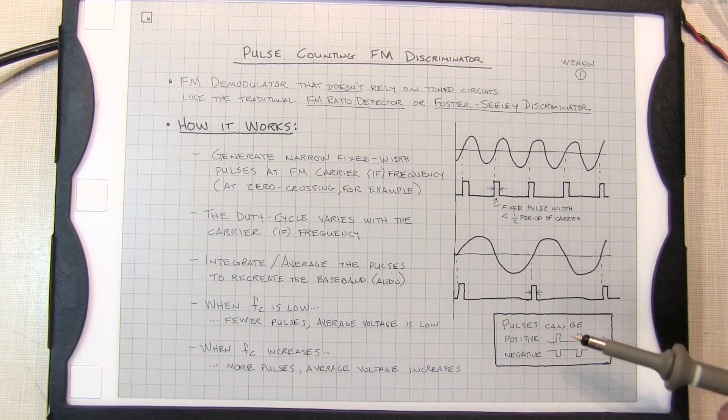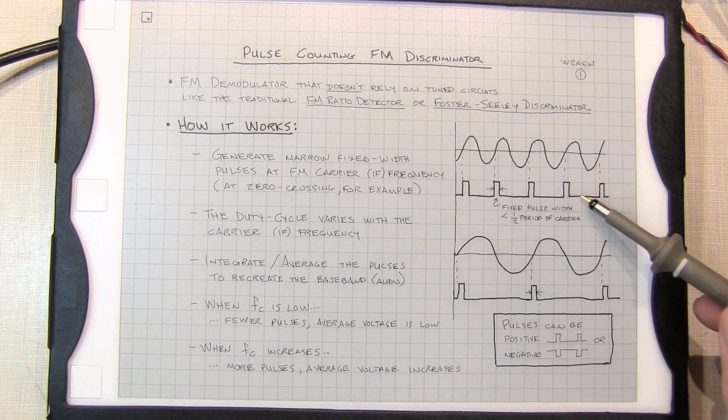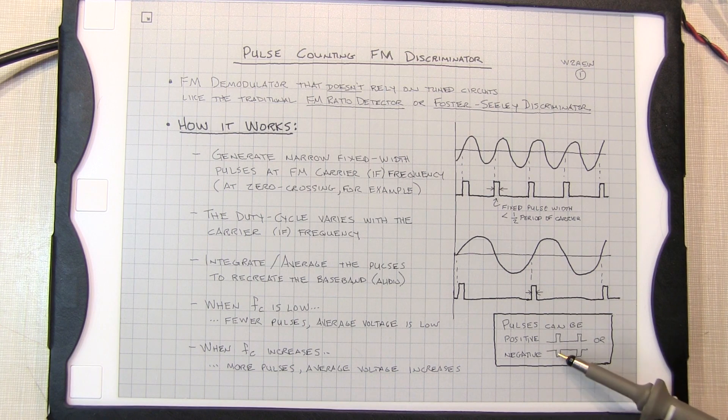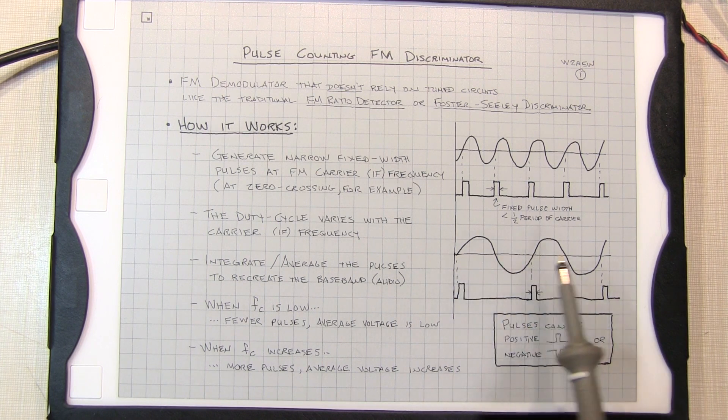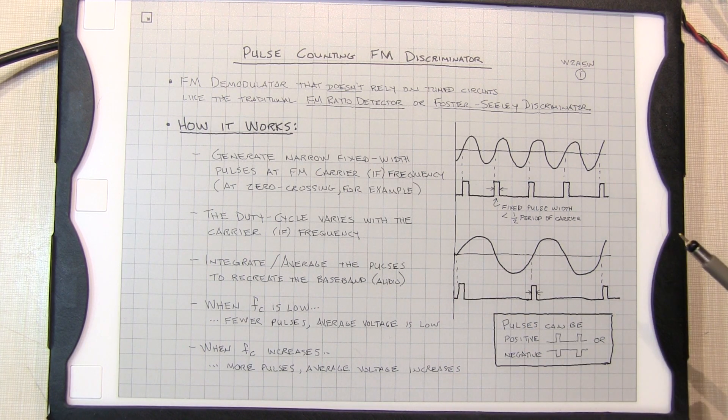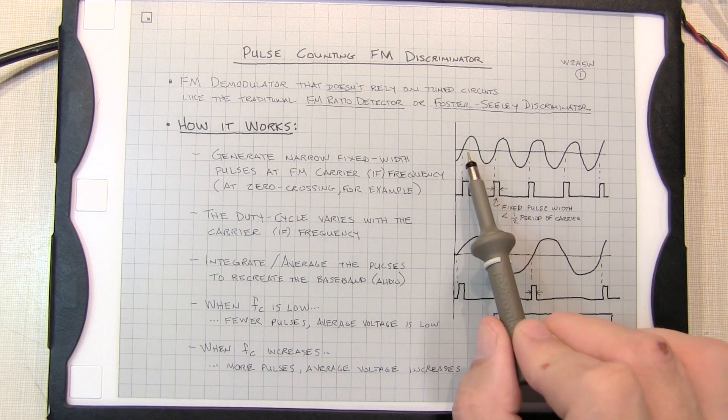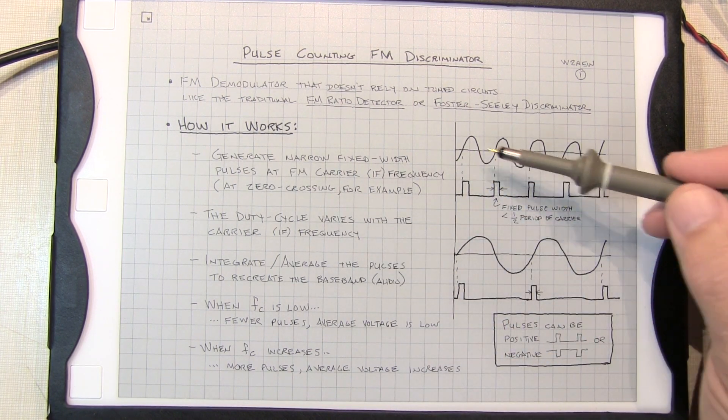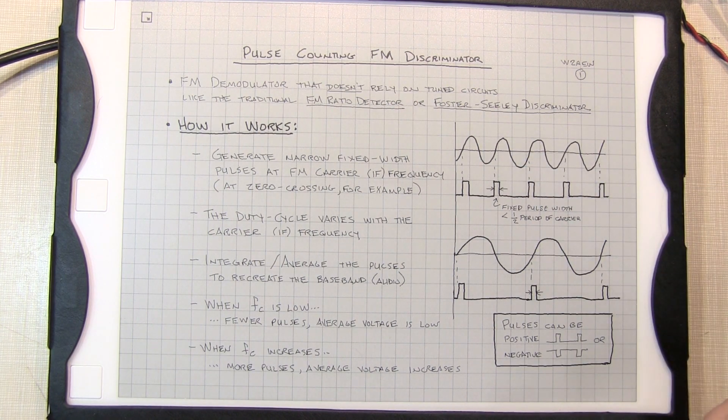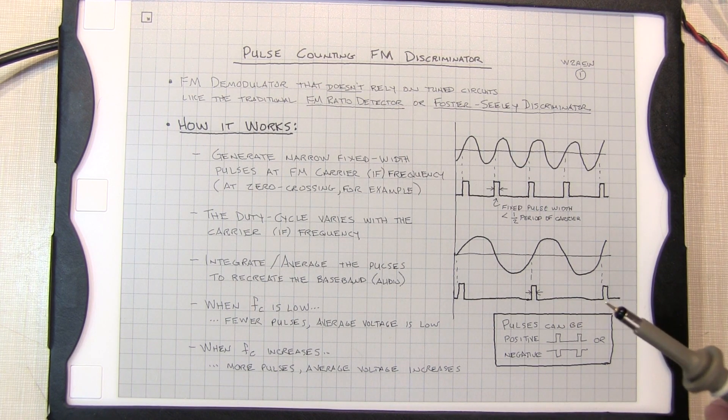Now the pulses can be positive pulses like I've shown in this drawing here or negative going pulses. It really doesn't matter as long as the pulse width is fixed and it's tied to the carrier. You can generate pulses on every zero crossing going up and going down or the way I've drawn it here just on the positive going zero crossings. It really doesn't matter, the technique will work either way.